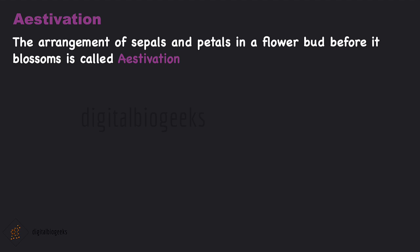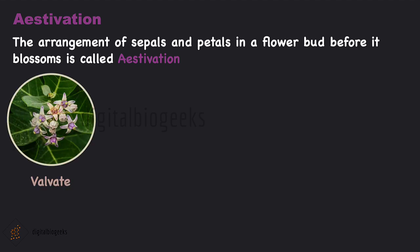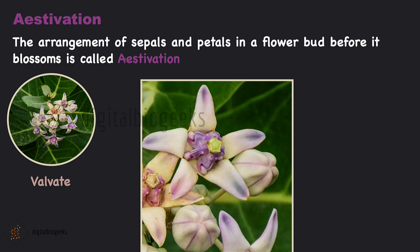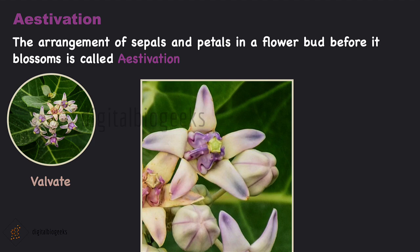The arrangement of sepals and petals in a flower bud before it blooms is called aestivation — it describes how petals and sepals are positioned relative to each other. The first type is valvate aestivation, for example calotropis: when the sepals and petals meet at the edge without overlapping each other.